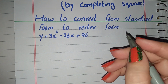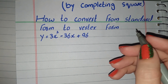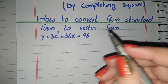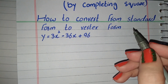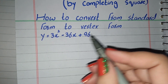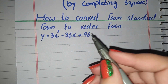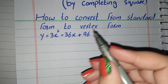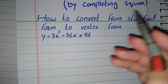Welcome to my class channel. In this video we will solve this question. The statement is: how to convert from standard form to vertex form. This is the standard form, and we will convert it to vertex form by the completing the square method.